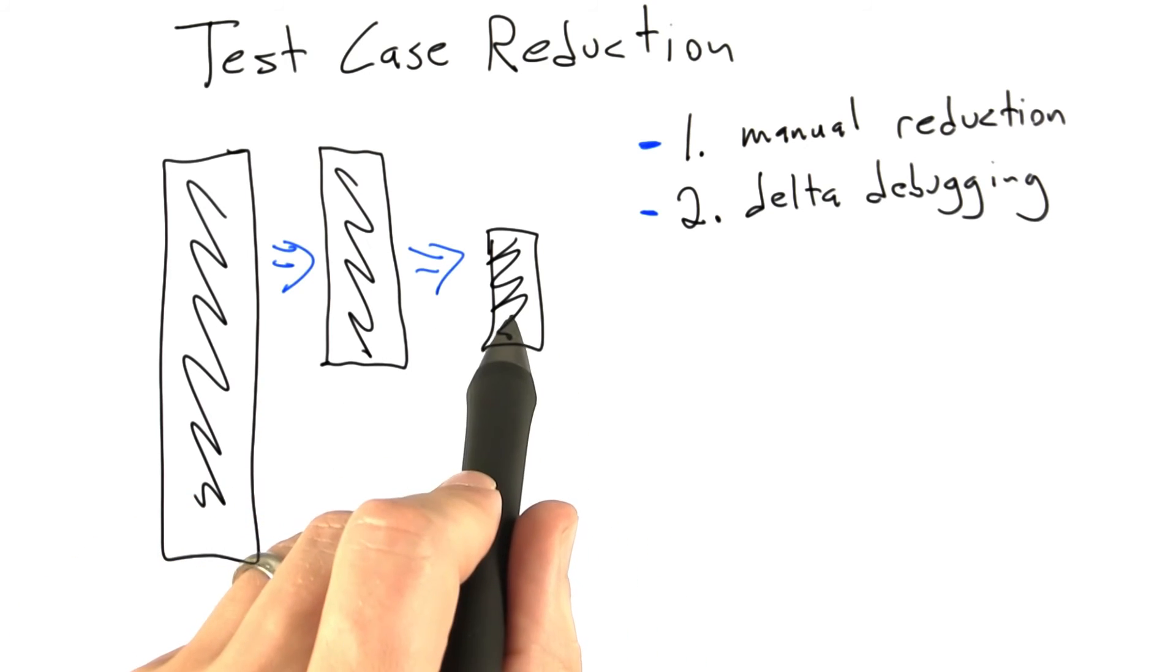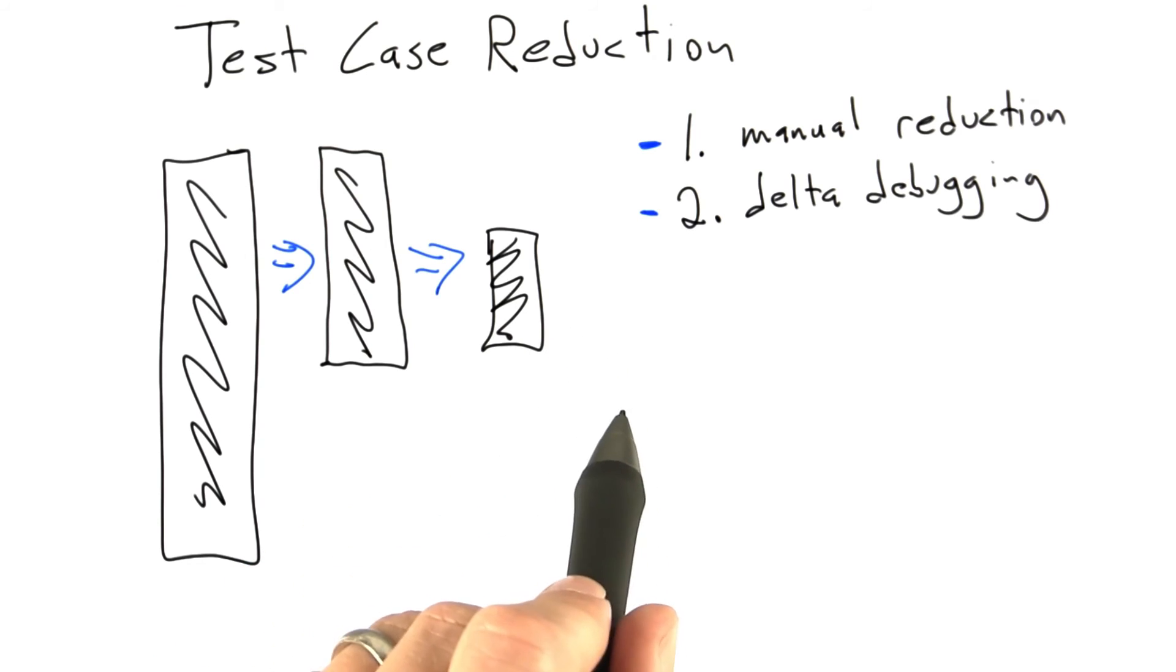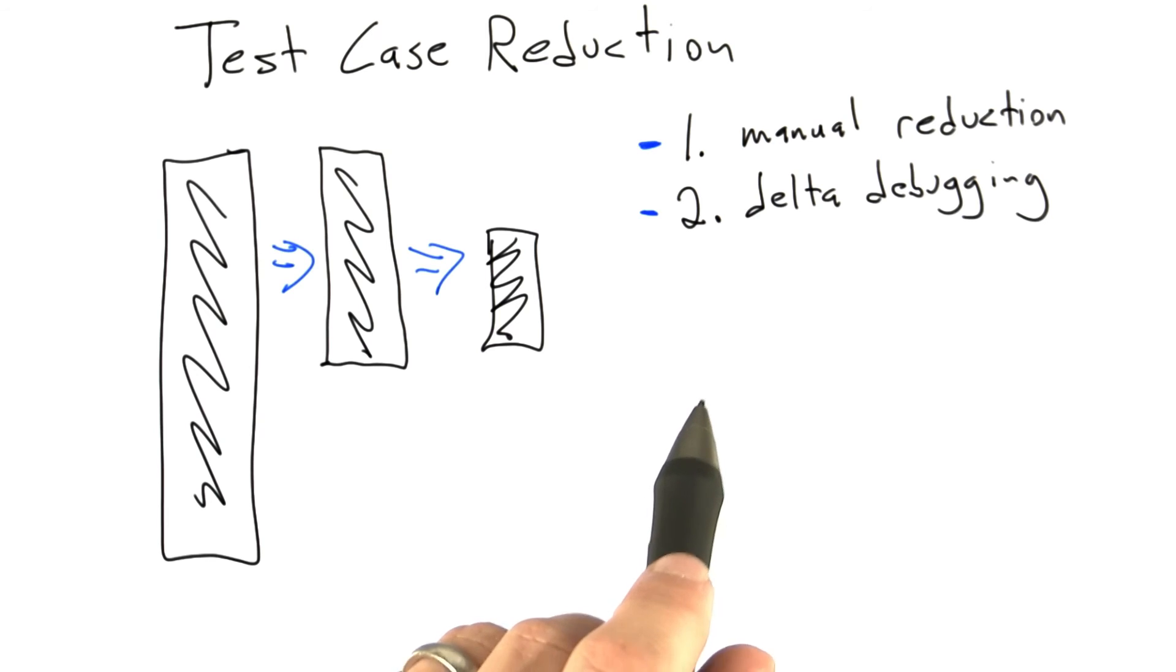And this loop terminates when the delta debugger, which has a bunch of heuristics built in for eliminating parts of the input, it terminates when this delta debugger can't reduce the input anymore. And so what I don't want to do is go into this technique in a ton of detail